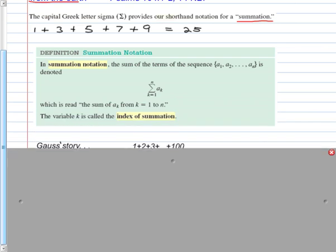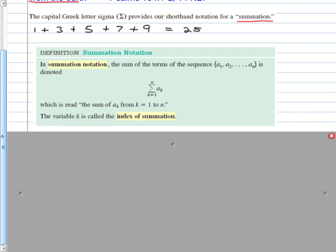Definition of summation notation. We have this Greek letter Sigma, capital Sigma. It's the summation of these terms, whatever those are. It says it's the sum of the terms in the sequence: A sub 1, A sub 2, all the way to A sub n. The summation of these terms from k equals 1, so that's where we start, to whatever the n number is.